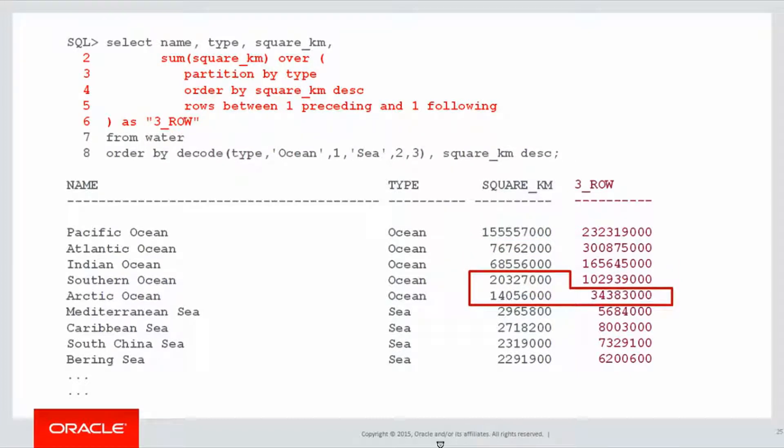When we get to the next row, notice that I'm not looking forward anymore. Why is that? Well, we're partitioning by type. I have effectively run out of ocean. I've now moved on to the sea in terms of the water region type, so I can't go any more forward.